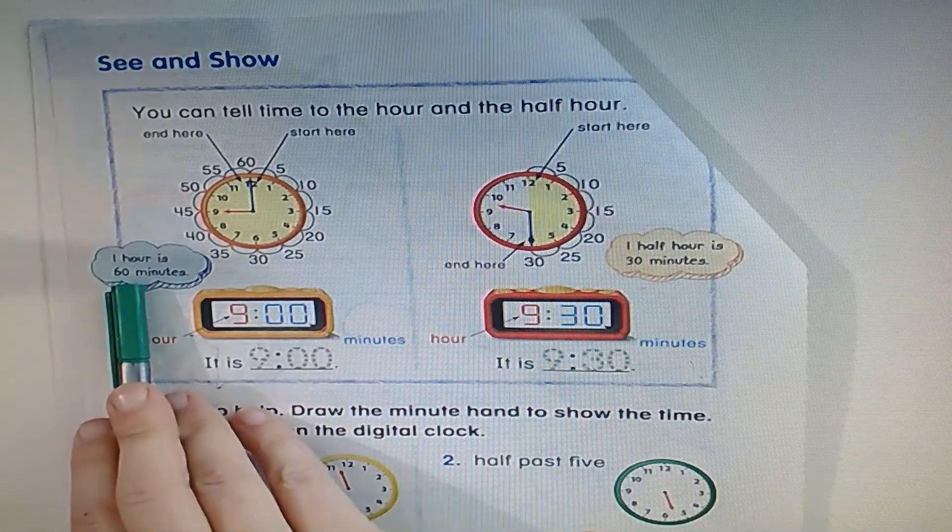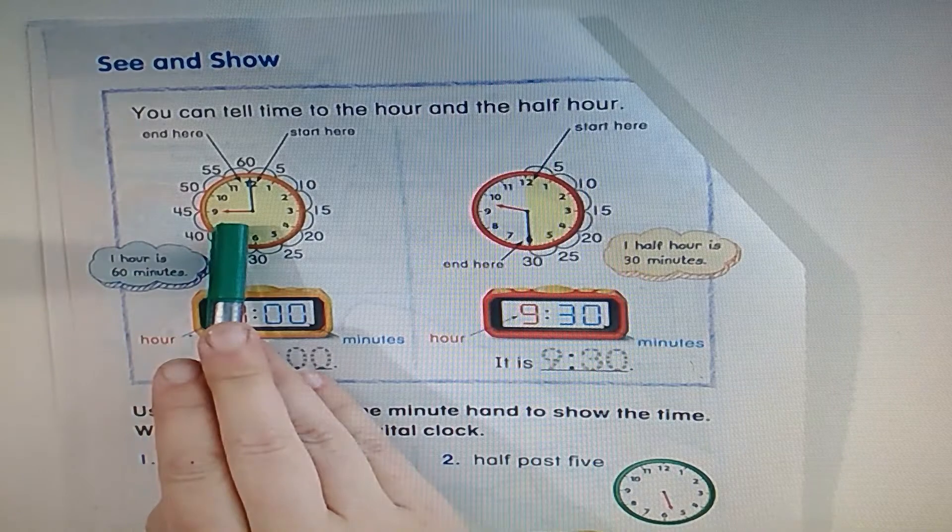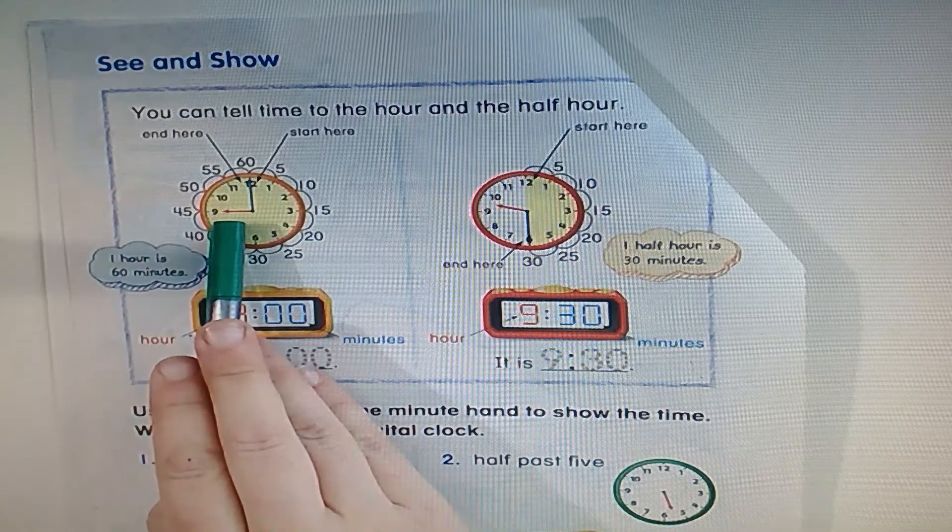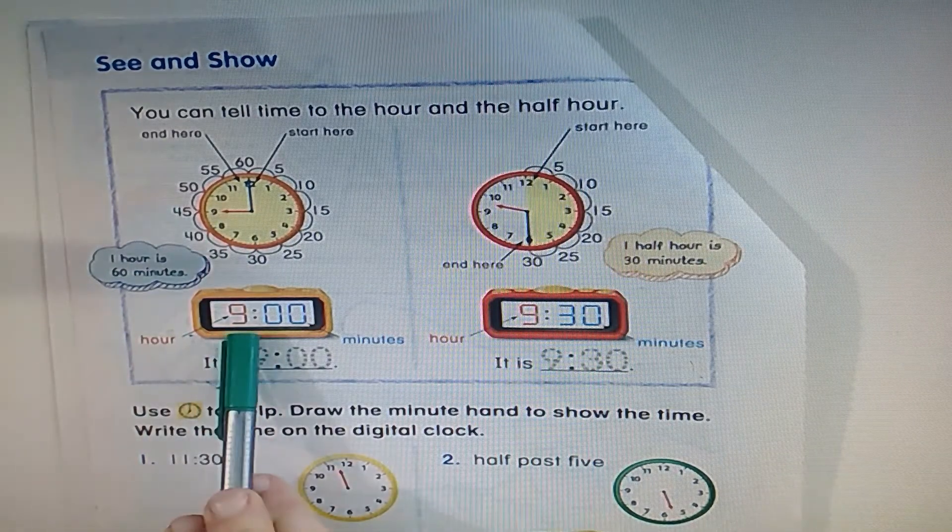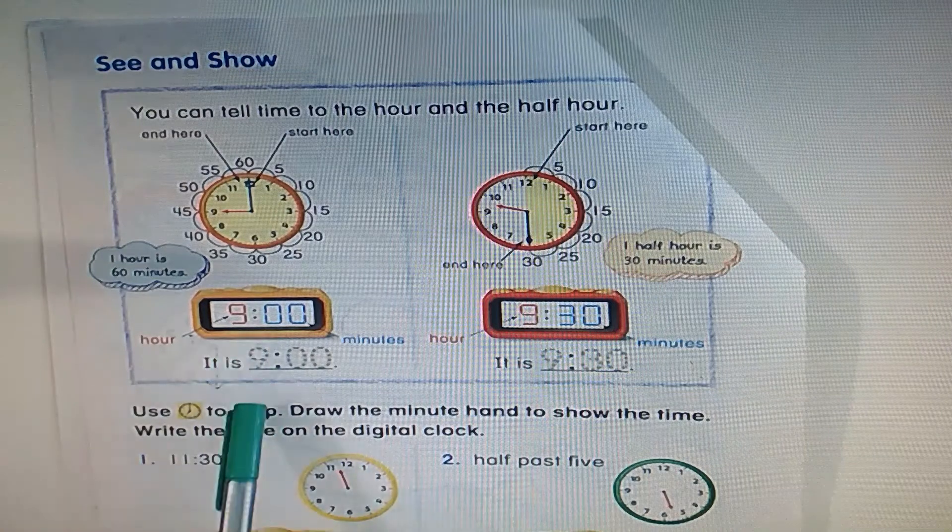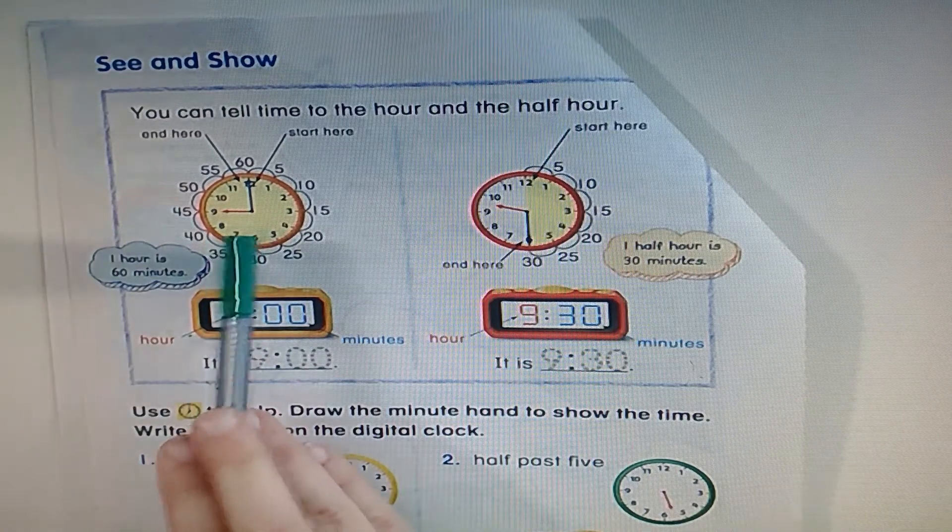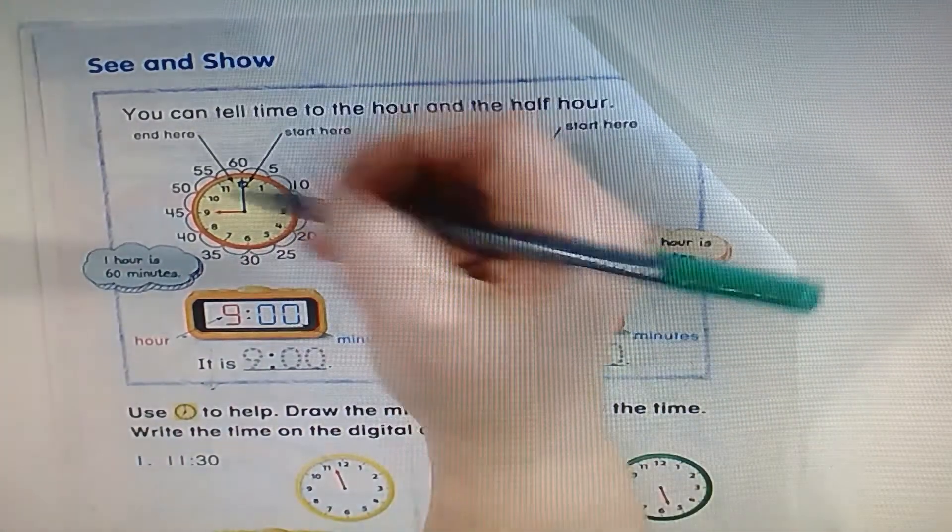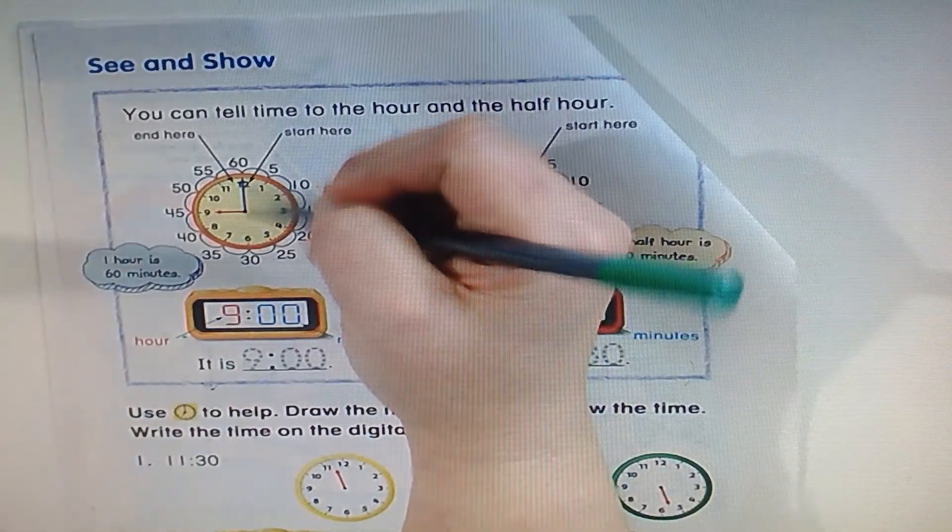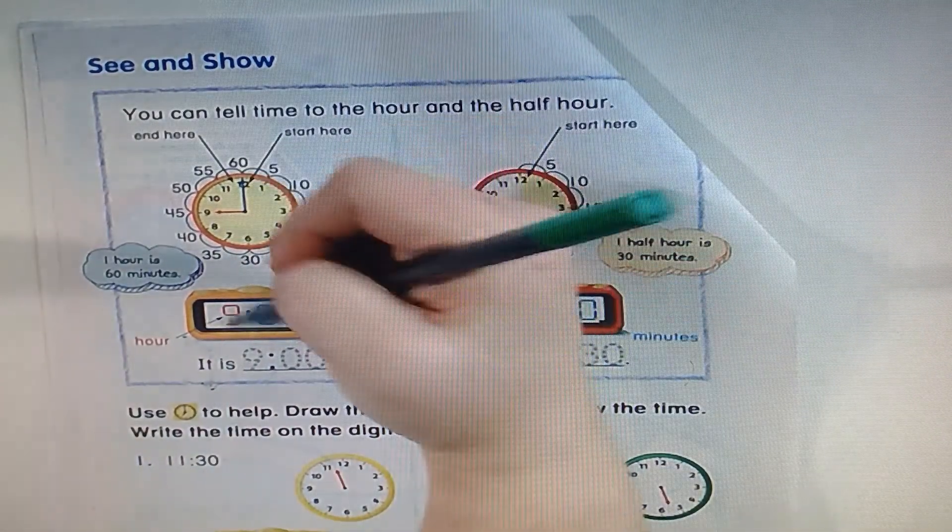One hour is 60 minutes. The red hand is telling the time, the hour. And the red hand is always reporting first, the shorter hand. So this clock is showing 9 o'clock because the minute hand is on the 12. Nine o'clock.